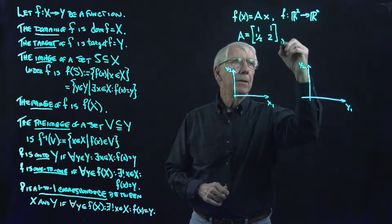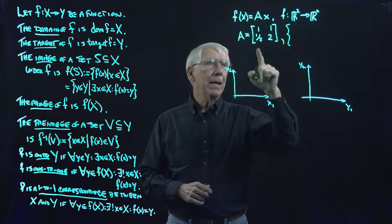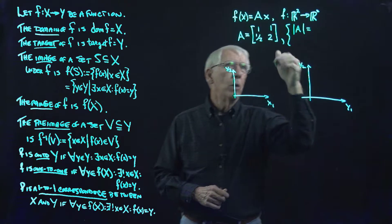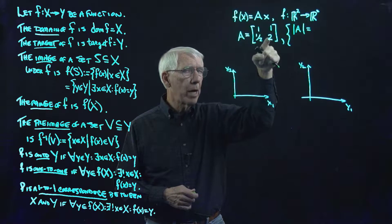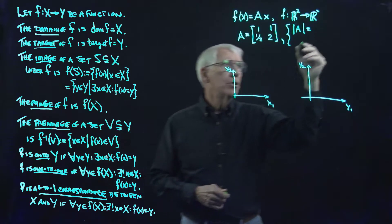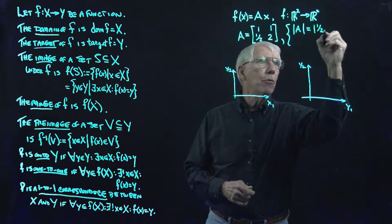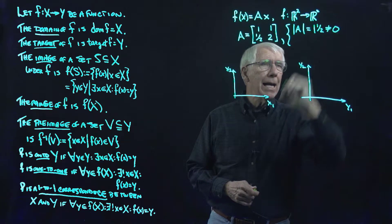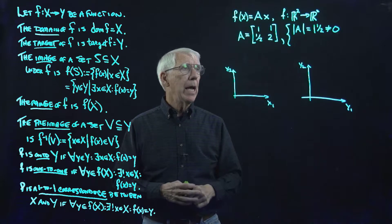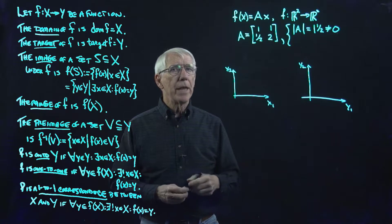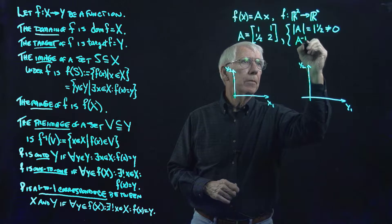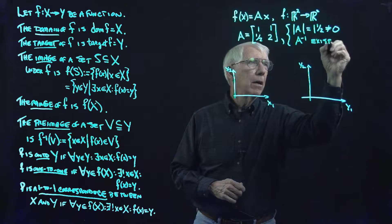The answer we can find by looking at the determinant of A. The determinant is 2 times 1 minus one-half times 1, which is 2 minus one-half, so that's three-halves, and that is not 0. So the matrix is non-singular, and if the matrix is non-singular then it has an inverse matrix — the inverse matrix exists.